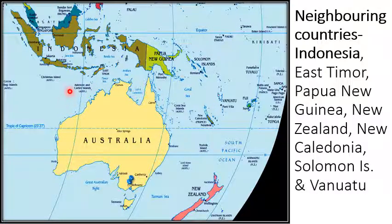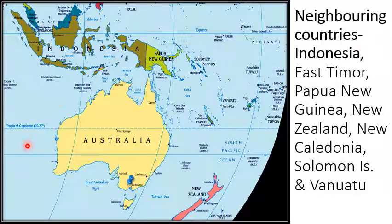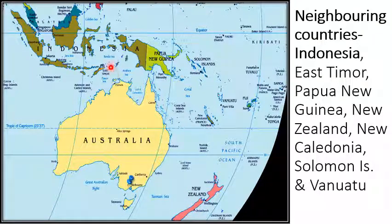Australia is a continent as it is surrounded by water from all sides. To the east and northeast lies the Pacific Ocean; to the west and northwest lies the Indian Ocean; and to the south, the Southern Ocean, also known as the Antarctic Ocean, which also surrounds New Zealand. The Timor Sea and the Gulf of Carpentaria and the Arafura Sea are to the north of Australia.